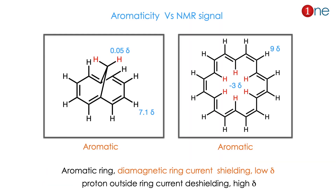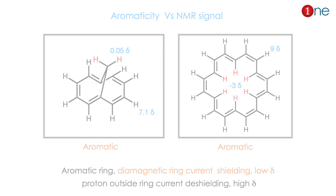In the next example, the same principle applies — protons inside the ring current have low chemical shift, while those outside have higher chemical shift. Both compounds here are aromatic and have two hydrogens each. The red hydrogens always show low chemical shift due to their diamagnetic nature, while those outside are paramagnetic. The key fact is: an aromatic ring has a diamagnetic ring current, which lowers the delta value.